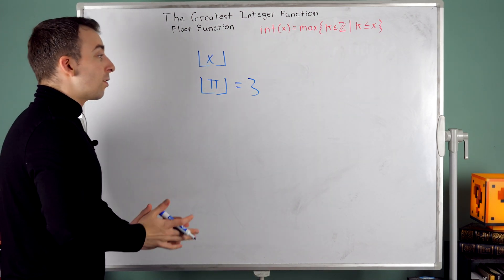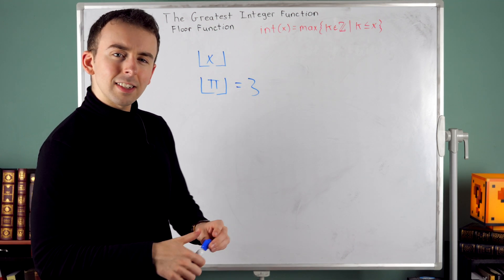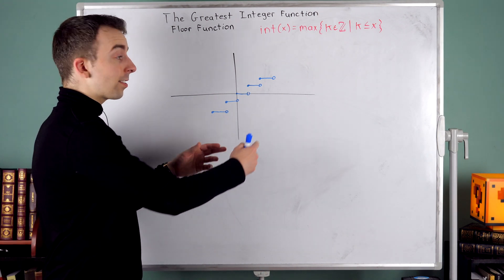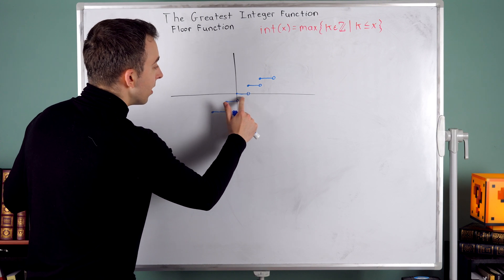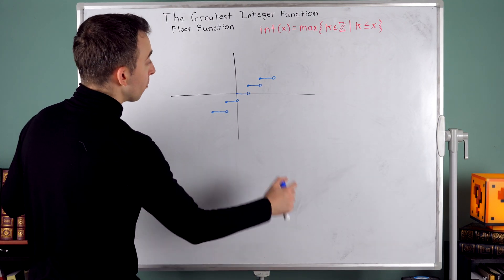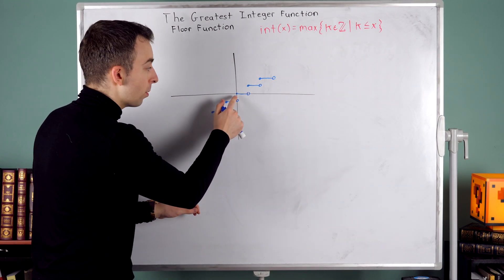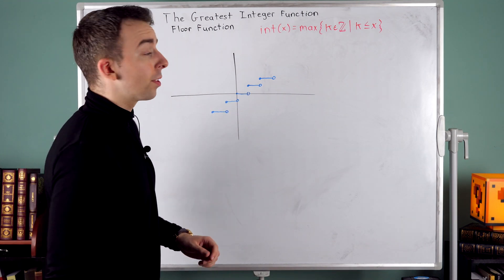Now the greatest integer or floor function also has a nice graph. So let's take a quick look at that. The graph of the int function looks something like that. You can see how when x is between zero and one, all of those numbers are being rounded down to zero. So when evaluated at zero, the output is zero, which is why there's a filled in circle there at the origin.